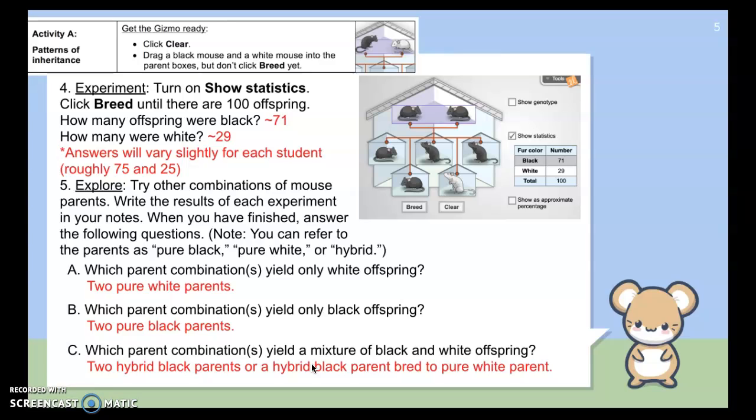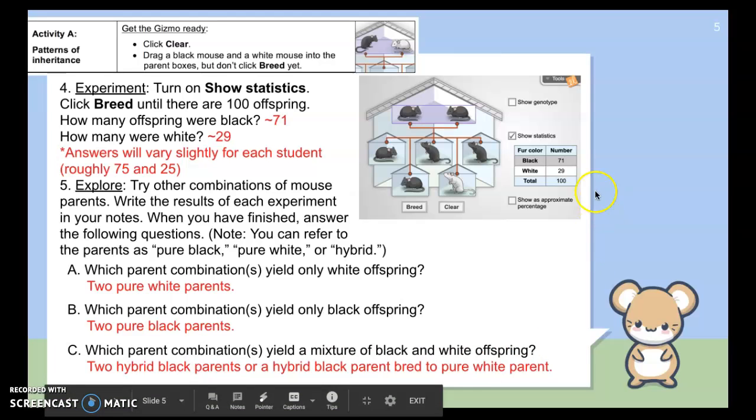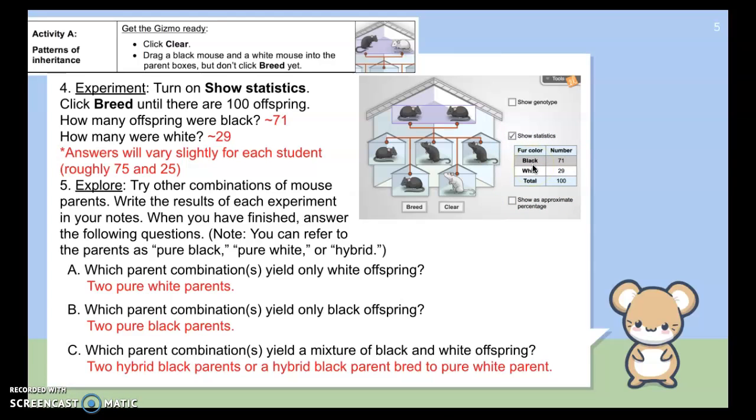And so if we continue on with activity A, it says now hit the statistics button. They asked you to take these two hybrid parents and continue to breed them until 100 offspring were produced. They asked you to keep track of how many of them were black and how many of them were white. Well, we all might have gotten slightly different data, but I took a screenshot of what I ended up getting. In my data, 71 of the mice in the offspring ended up being black and 29 out of the 100 were white. If I think about this in terms of percentages, it's pretty close to three-fourths being black and one-fourth being white. Everyone should have got somewhere close to this.